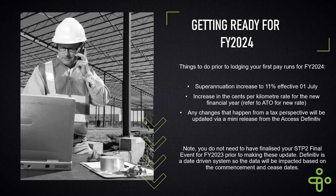To get ready for financial year 2024, most of you would know that superannuation is increasing to 11% effective the 1st of July, and Andrew has reached out to most of you to help organise that. There is also an increase to the cents per kilometre rates for the new financial year - I would suggest referring to the ATO for that new rate as it varies across different industries. Any tax perspective changes will be updated via a mini release from Access Definitive, and at this stage there are no changes to the individual PAYG withholding rates for the new financial year.